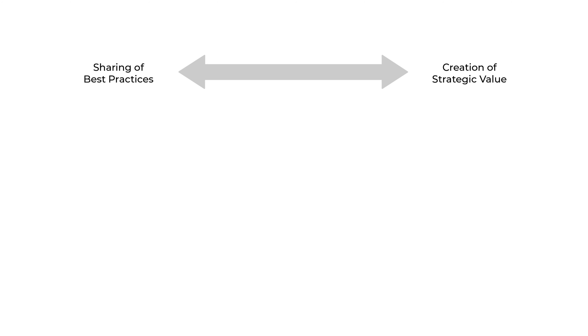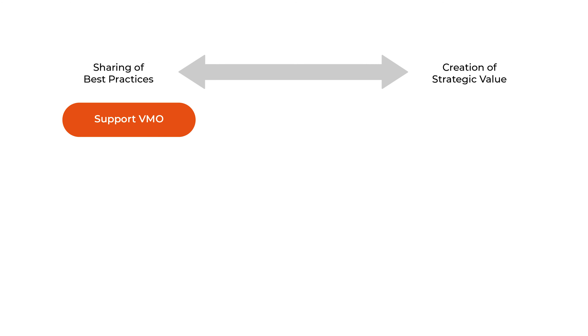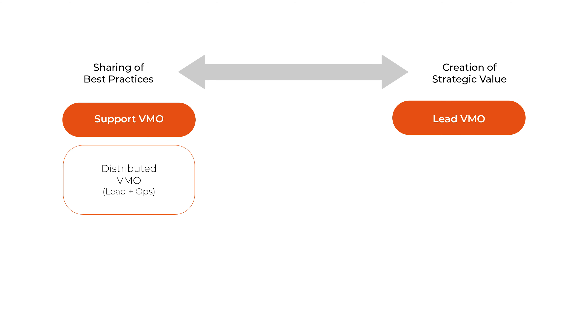On the one hand you have to ask what will be the role of your vendor management organization. That could vary from what we call a sharing of best practices, where the vendor management office plays a supporting role that leaves a lot to the contract owner and the relationship owner within the business, all the way to a leading VMO that consolidates quite a bit of the contract management and relationship management responsibilities.